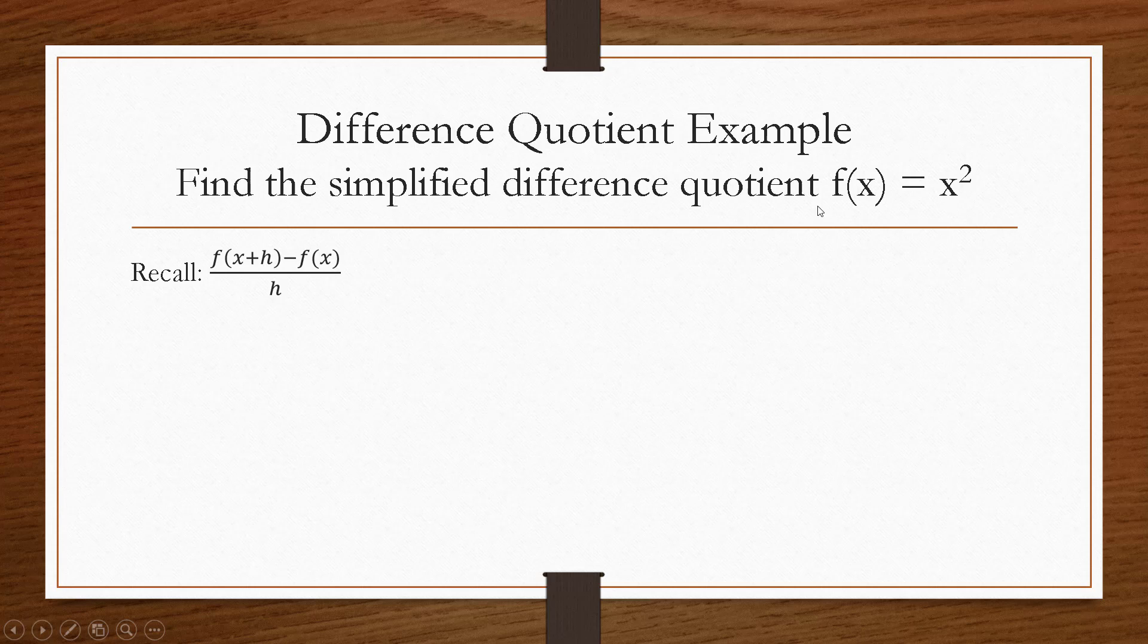Well, we know f of x is just x squared. We can plug it in, and h is just h, but we do want to find out what f of x plus h is. So let's figure that out first. So if I plug in x plus h into this formula, I would get x plus h all that squared. Then if I distribute that, I would get x squared plus 2xh plus h squared.